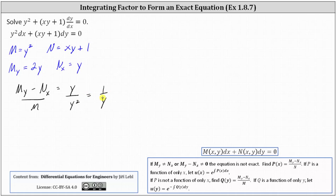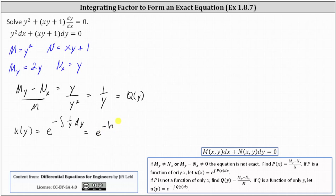Simplifying, we have one over y. We divided by M, and we want a function of only y, which we have, and we call it q of y. Now we know the integrating factor is u of y equals e to the power of the negative integral of one over y dy, which gives us e to the power of negative natural log y, which we can also write as e to the power of natural log y to the negative one, giving us the integrating factor u of y equal to y to the negative one, or one over y.